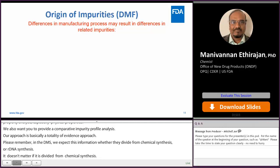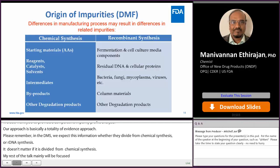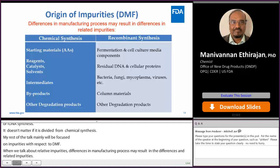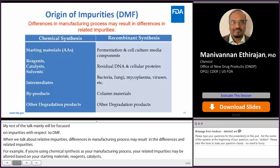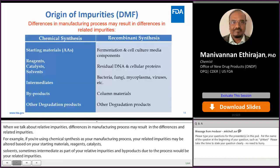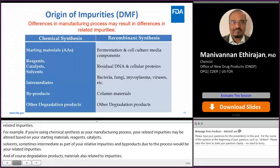When you talk about related impurities, differences in manufacturing process may result in differences in the related impurities. For example, if you're using chemical synthesis as your API manufacturing process, your related impurities may be altered based on your starting materials, reagent catalysts, solvents in the process, intermediates, and degradation products. But in the case of the recombinant synthesis process, your related impurities will be different from the chemical synthesis process.